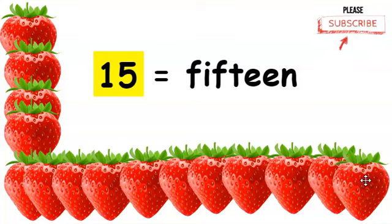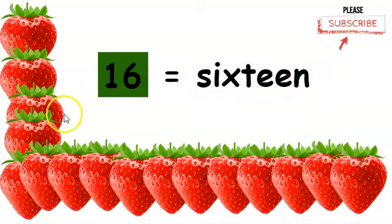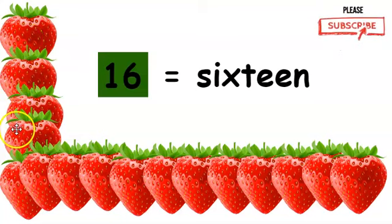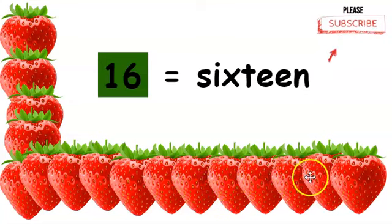As you learn numbers, learn how to count. This is the number sixteen. This is how you write the word sixteen. There should be sixteen strawberries. Let's count. One, two, three, four, five, six, seven, eight, nine, ten, eleven, twelve, thirteen, fourteen, fifteen, sixteen strawberries.